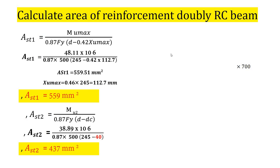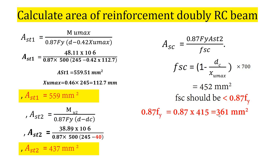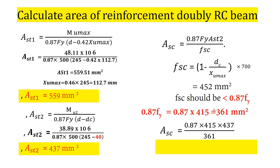The compression reinforcement Asc equals (0.87·fy × Ast2) / fsc, where fsc is the stress in compression steel, calculated using dc/xu,max. We get Asc = 452 mm². However, there is a condition: the stress in compression steel must be less than 0.87·fy. Here 0.87 × 415 = 361 MPa, and fsc exceeds that, so we adopt fsc = 361 MPa. Recalculating, Asc = 437 mm².